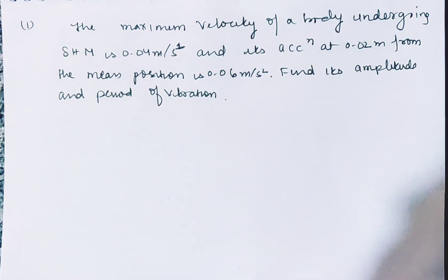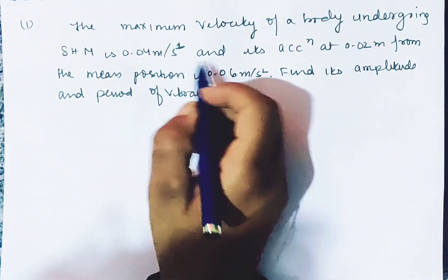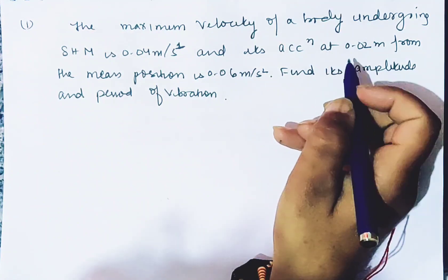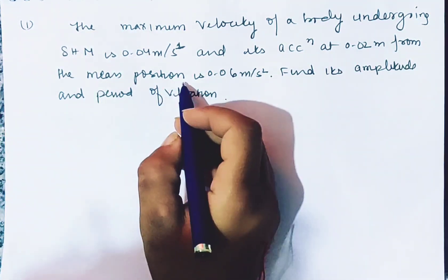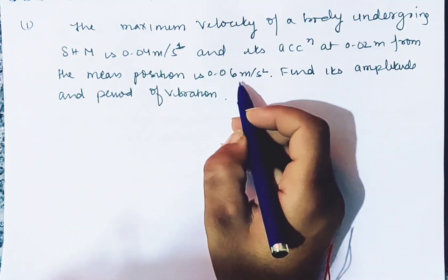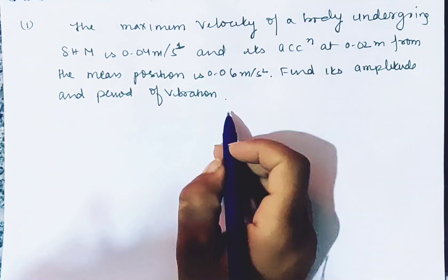The maximum velocity of a body undergoing SHM is 0.04 meter per second and its acceleration at 0.02 meter from the mean position is 0.06 meter per second square. Find its amplitude and period of vibration.